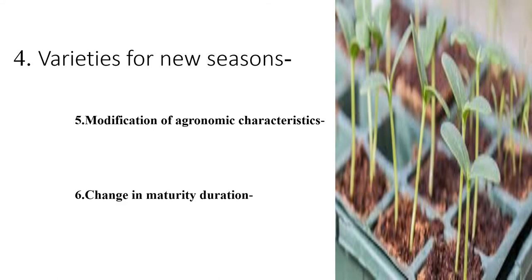Modification of agronomic characteristics such as plant height, tillering, branching, and erect or trailing habit is often desirable. For example, dwarfness in cereals is generally associated with lodging resistance and fertilizer responsiveness. Changes in maturity duration permit new crop rotations and often extend the crop area.